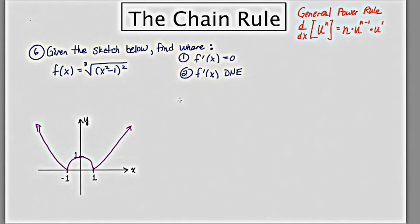So, let's start by finding the derivative. Let's say, y is equal to x squared minus 1 to the 2 thirds.